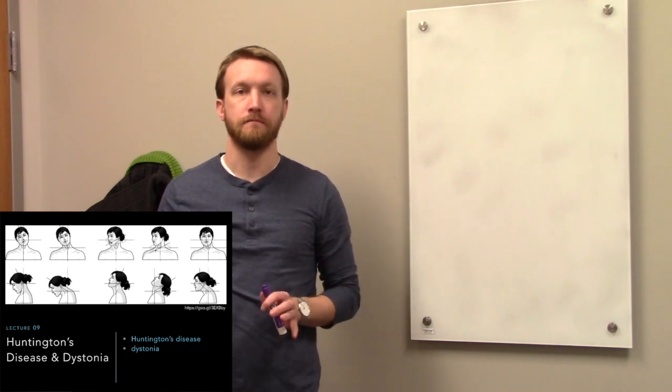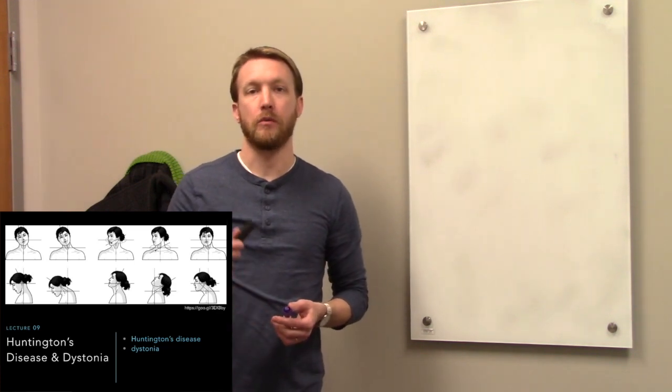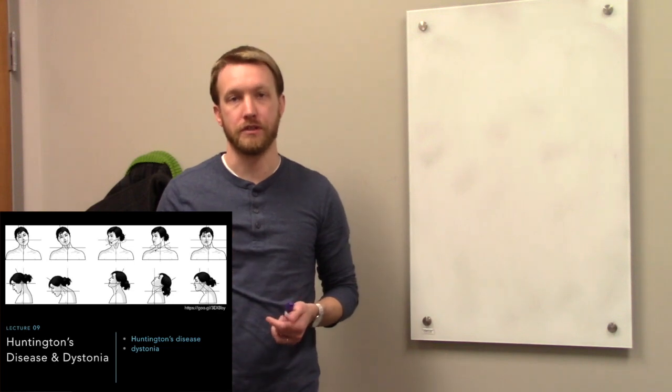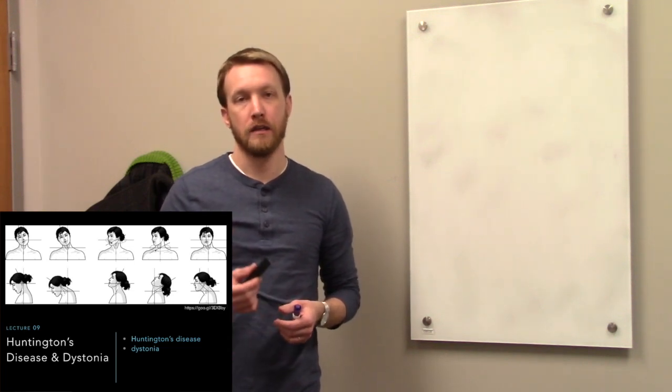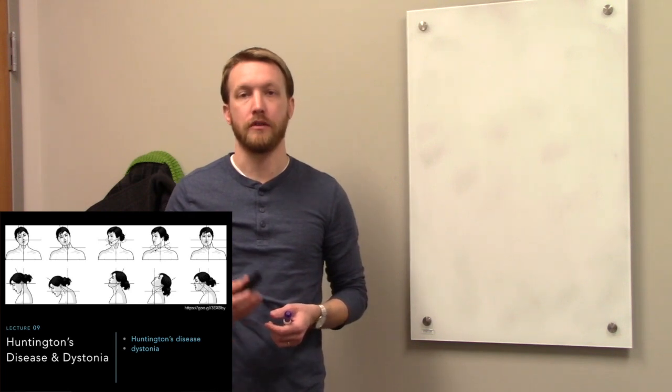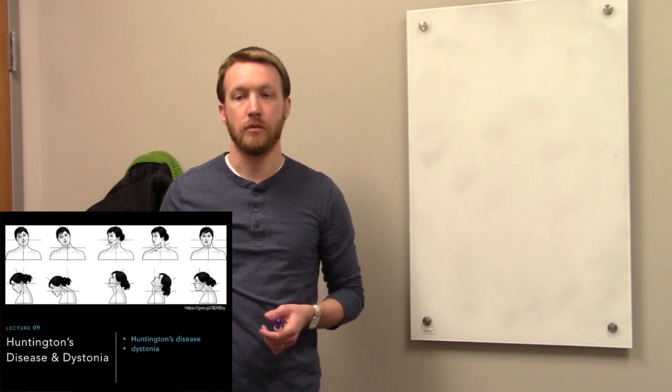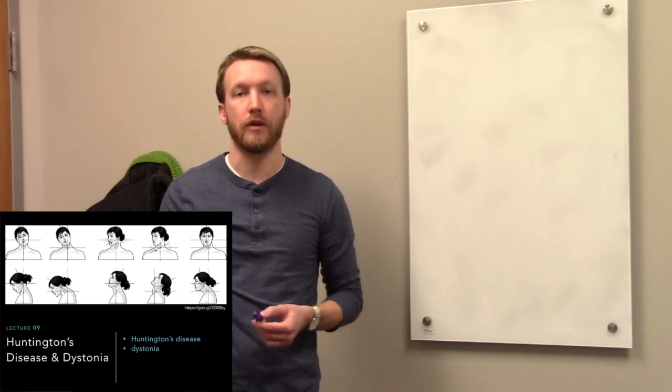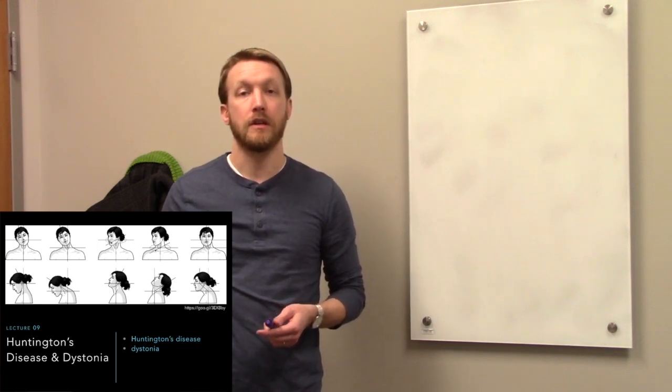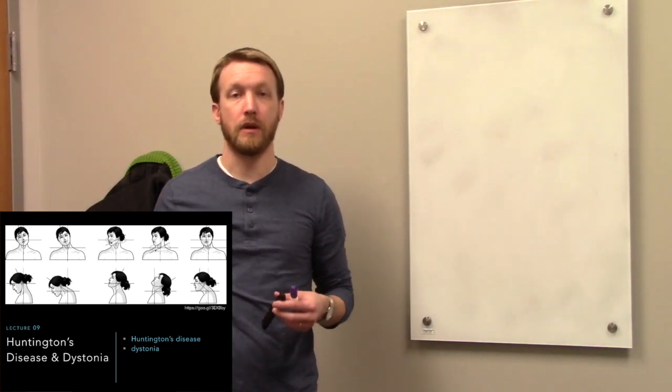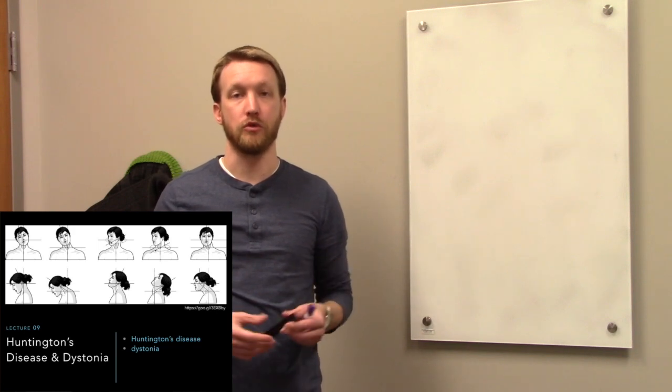Huntington's disease and dystonia can also be caused by abnormalities in basal ganglia function, but rather than being an absence of movement, in this case we have an increase in movement. Huntington's disease is invariably caused by neurodegeneration within the basal ganglia, but rather than causing more of an increase in the indirect pathway, now we're getting a decrease in the indirect pathway, so we lose our no-go. That's why we have these involuntary choreic movements.